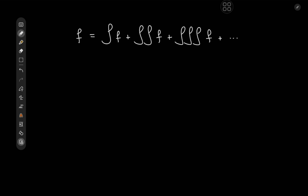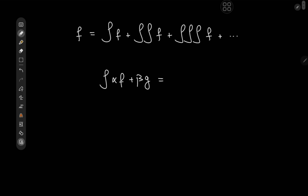The integral operator is a linear transform. What that means is that if you take the integral of some alpha times a function f plus some beta times a function g, where alpha and beta are constants, then we have alpha times the integral of f plus beta times the integral of g. So it acts linearly on its arguments. Those who have a background in linear algebra are familiar with this.